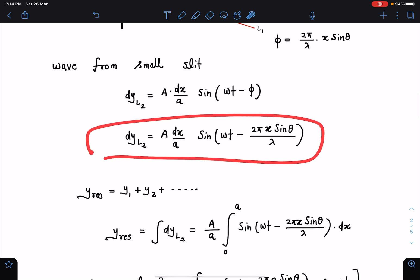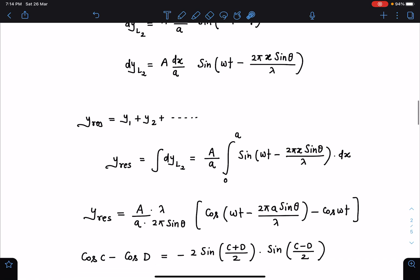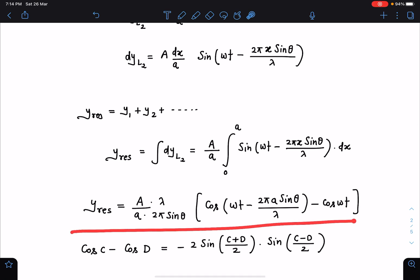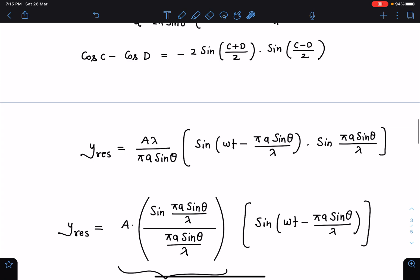Which is equivalent of integral dY_L2. A by A I can take common and 0 to A will be the limit in order to consider all sources, all tiny tiny sources. sin omega t minus 2 pi x sin theta by lambda, this is a function of x. When we integrate this I am just directly writing the result. Y resultant I am getting A by A lambda by 2 pi sin theta cos omega t minus phi minus cos omega t. I can use cos c minus cos d formula. When we apply and simplify it comes something like this.